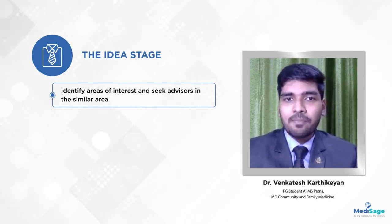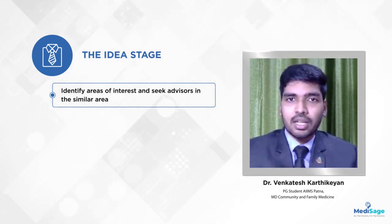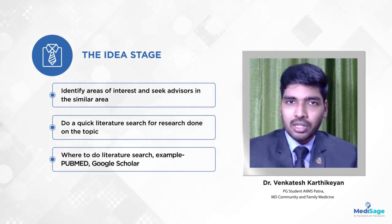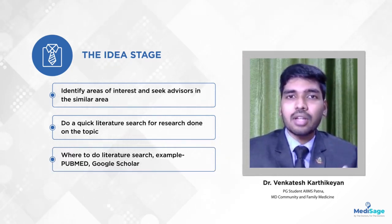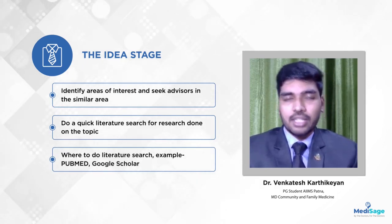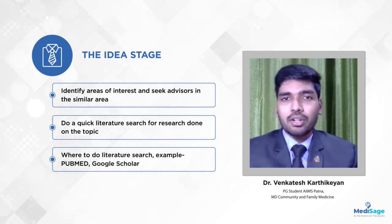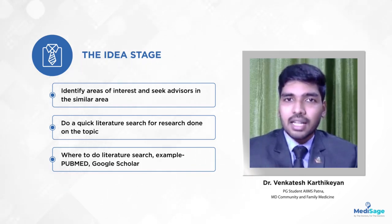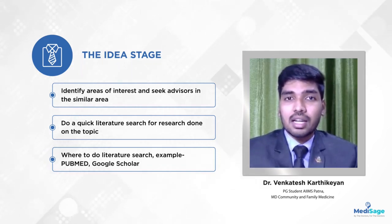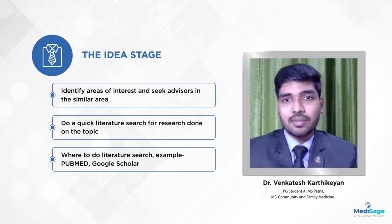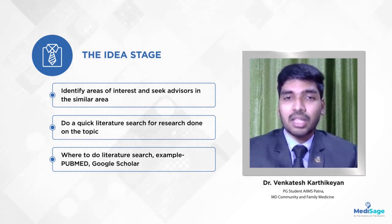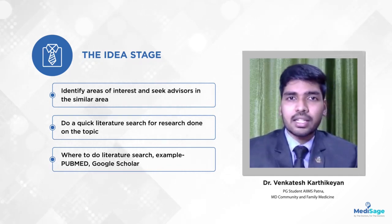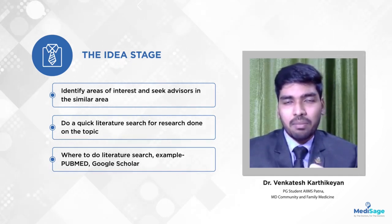Once you finalize the area, you should do literature reviews — searching for related topics in PubMed and Google Scholar. You should search in PubMed first, where you'll get quality journals. See what type of studies are being done, whether the study is feasible in our setting, what is the cost incurred, and what is the methodology. At least 30 to 40 research articles you should go through in PubMed.